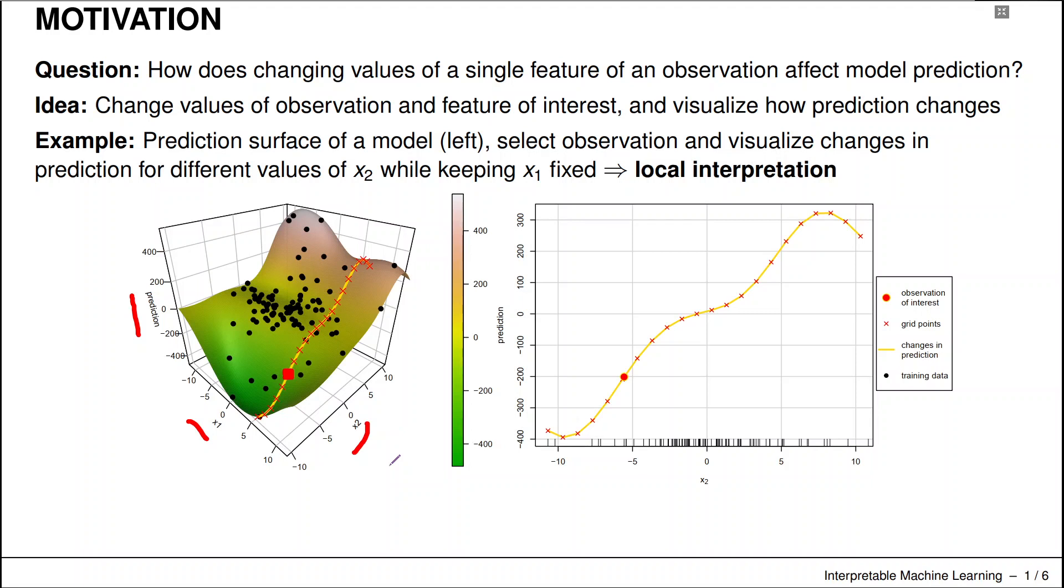So in this instance we would plot the ICE curve with respect to the feature x₂ and that observation x* here. That means we take our function f̂.